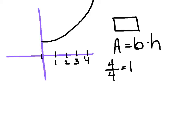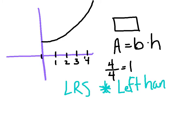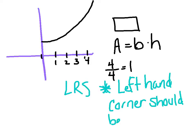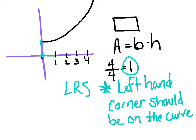Since we're starting with the left-hand Riemann sum, the left-hand corner should be on the curve. Left-hand Riemann sum — left-hand corner on the curve. Right-hand Riemann sum — right-hand corner on the curve. I'm going to carefully draw in my left-hand Riemann sum. I'm going to start at my lower bound, which was 0, put my point there, and go up on the left-hand side. Each base is going to be 1, and when I hit the curve, I stop, arrow over, and come down.